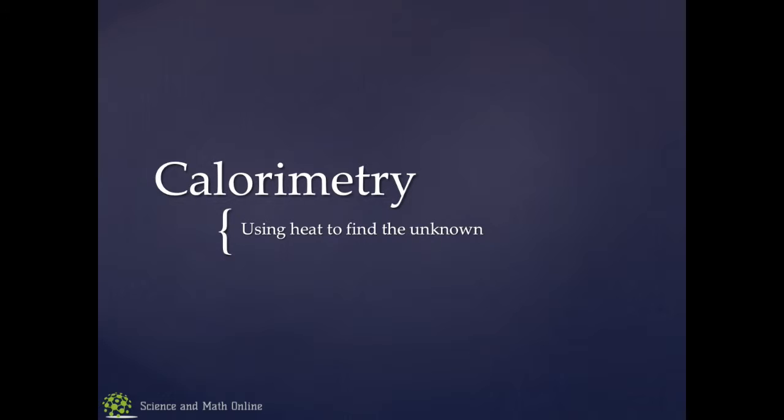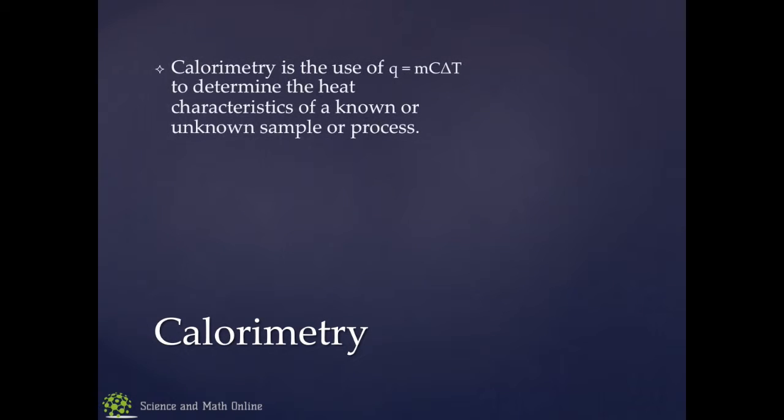Calorimetry is the idea of measuring heat. When we talk about it in a high school chemistry class, we're usually talking about finding some unknown value using something we know. So let me run through what that looks like. We're going to use Q equals mc delta t to determine usually c. We're trying to find the specific heat of an unknown by using a known.